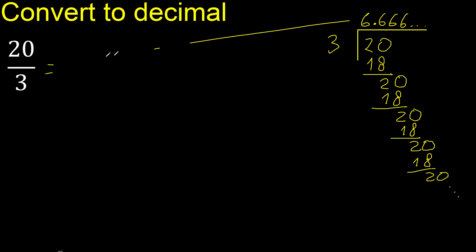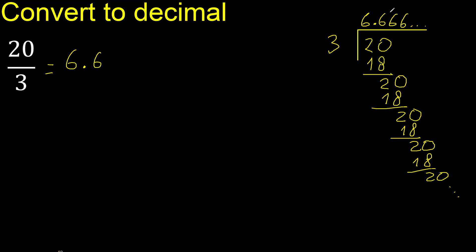Here — 6 after the decimal point, 6 repeating. Therefore, the answer is like this: 6.666... with 6 repeating.